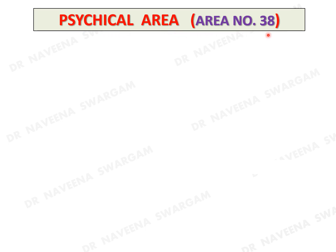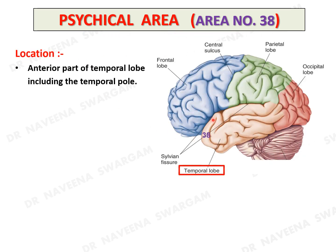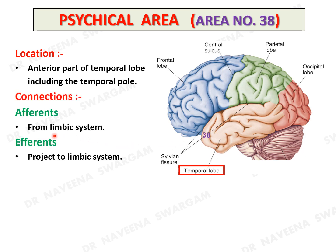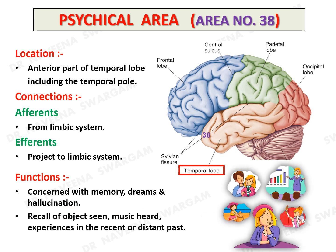Psychical area, area 38: it occupies the most anterior part of the temporal lobe, which includes the temporal pole. It is connected to the limbic system, which is why it is concerned with memory, dreams, and hallucination. It is also concerned with recall of objects seen, music heard, and experiences in the recent or distant past.